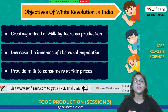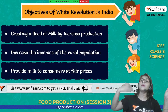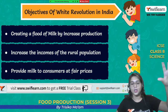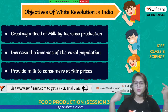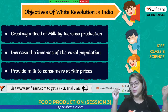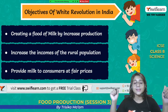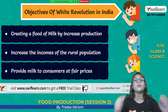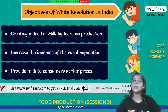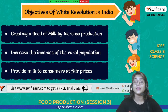The main objectives of the White Revolution were: first, creating a flood of milk by increasing production so that milk reaches everyone. Milk is a complete food because it contains all the different nutrients — carbohydrates, protein, fat, vitamins, minerals — all we get from milk. That is why we call milk a complete food, and this milk should reach every person in our country.